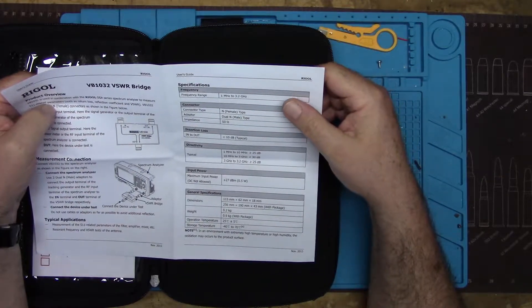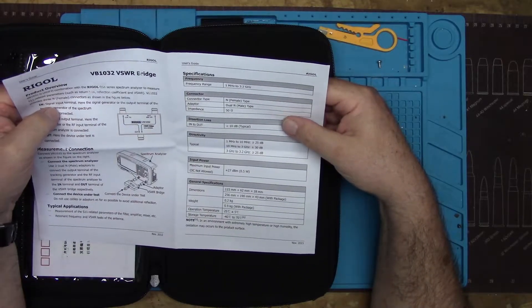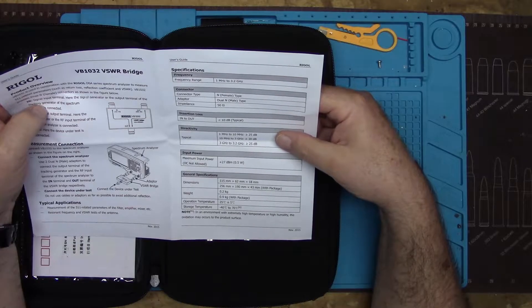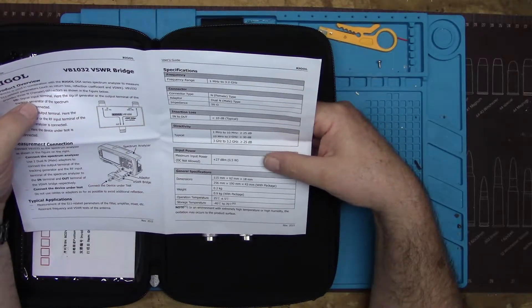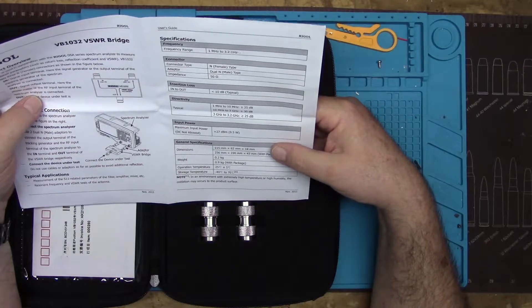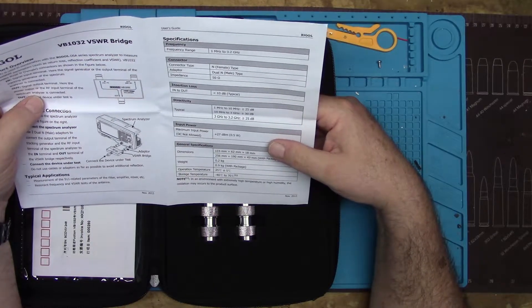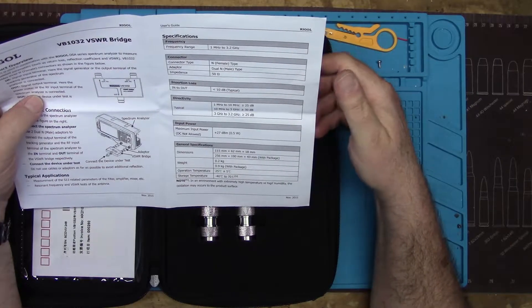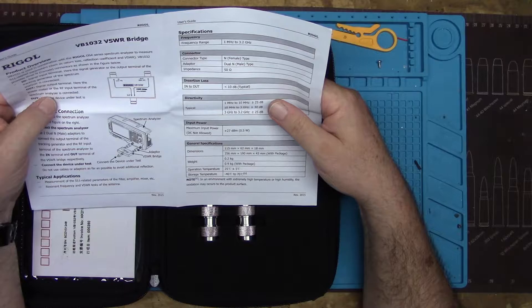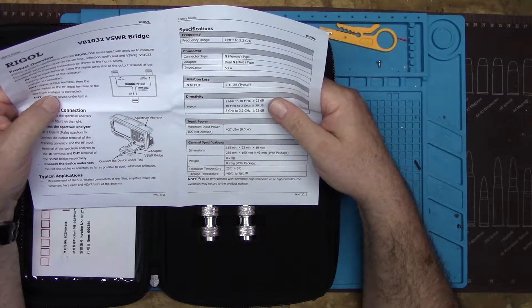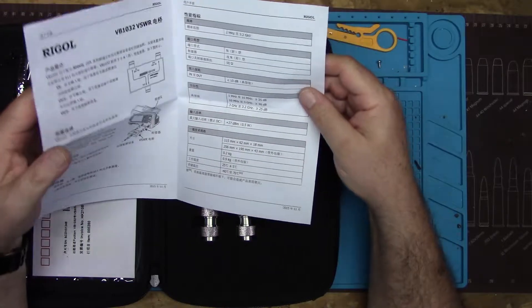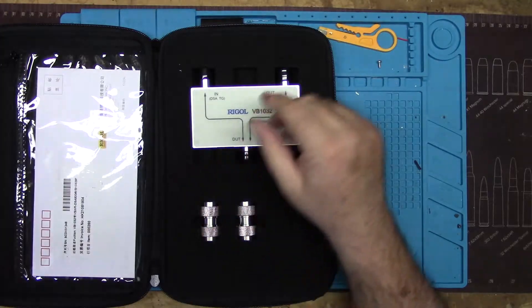This does not have the complete range of my spectrum analyzer, which is nine kilohertz to three gigahertz, but for anything we're going to do as amateur radio operators, this covers the entire ham band range. There is some insertion loss between the input and the DUT, less than 10 dB typical. Half watt maximum input power on this device.